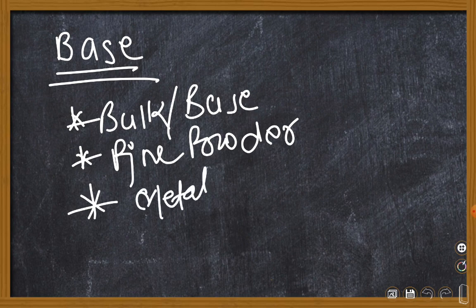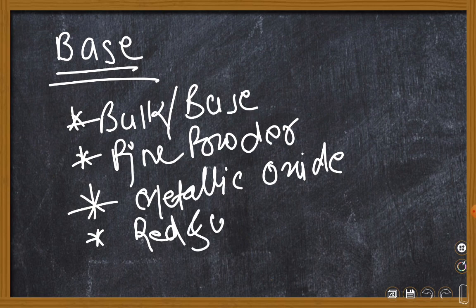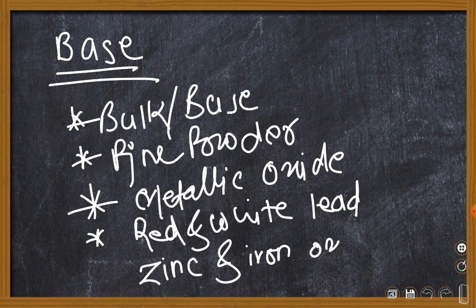Most metallic oxides make up the base of the paint. Examples for base of the paint are red and white lead, zinc, and iron oxide. This is what base of the paint is - it forms the bulk or base of the paint.